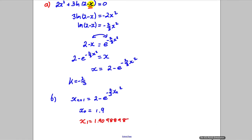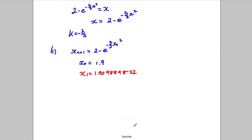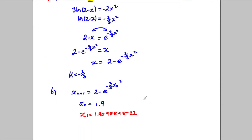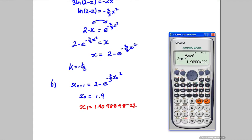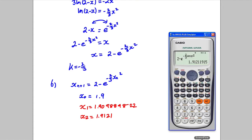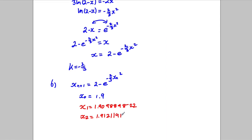So x₁ = 1.9098848...22. I'm going to write all of these down until it stops moving to 3 decimal places. Press equals again: x₂ = 1.9121...1915.